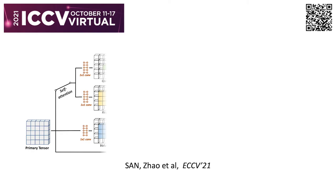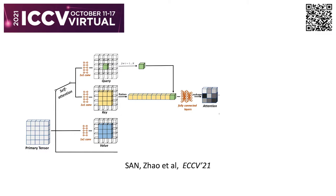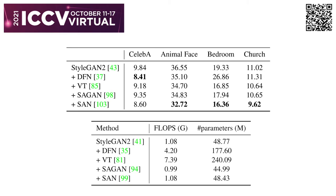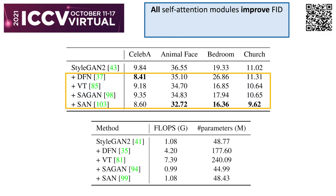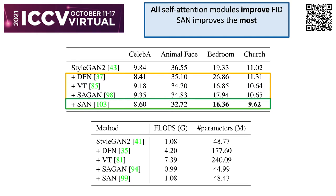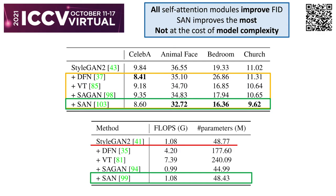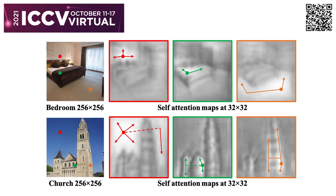The self-attention module starts with key, query, and value calculation. We then learn a fully connected layer to interact between each query vector and a key patch, weigh the value tensor with the attention map, and use a residual layer for the final output. We experimented with various self-attention modules in the generator — all of them improve generation quality for several datasets in terms of FID metric, while the state-of-the-art one improves the most. The improvement is not at the cost of model complexity, with comparable FLOPs and trainable parameters to StyleGAN2, so we conclude the improvement comes from stronger representation.